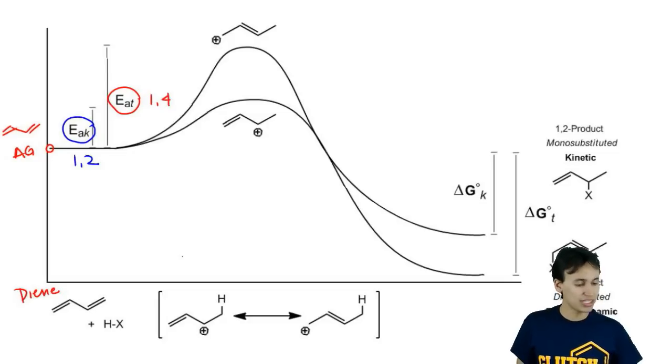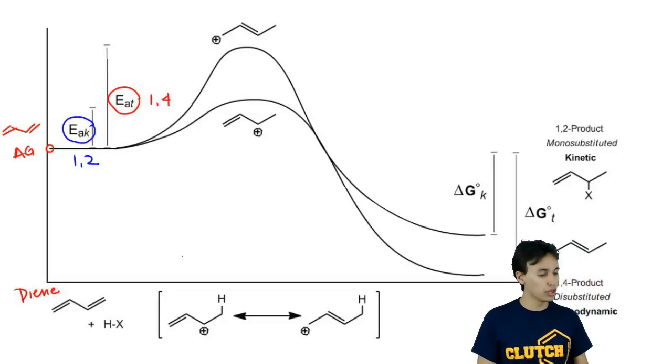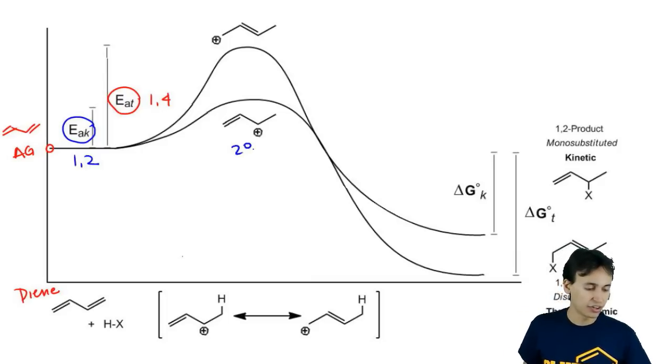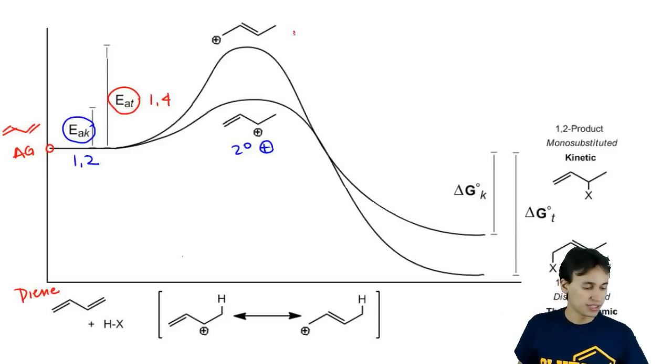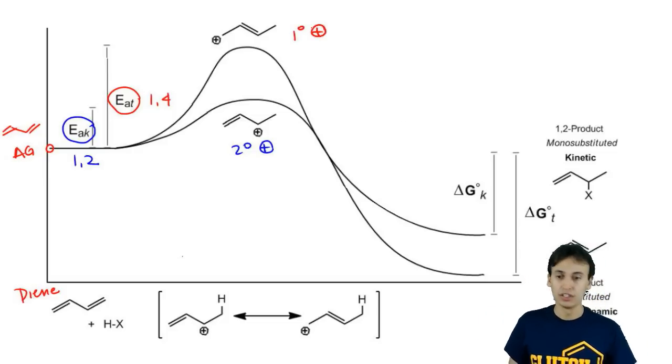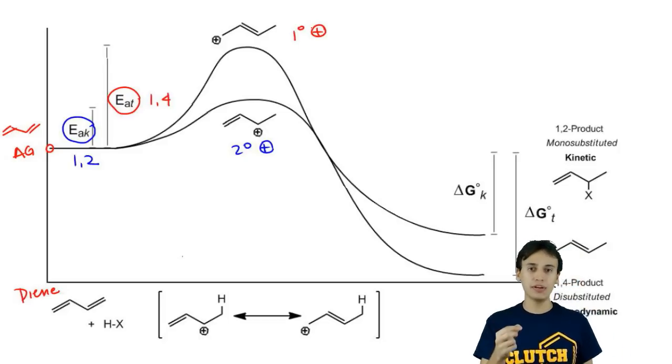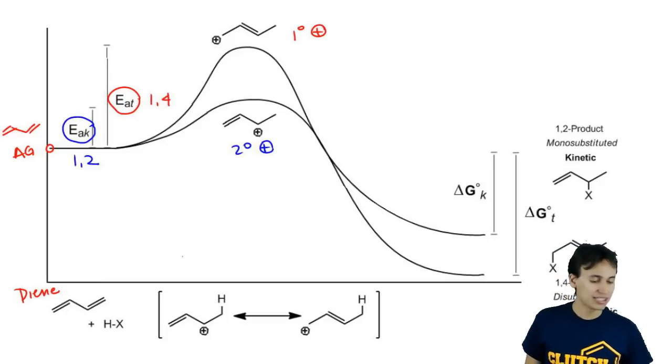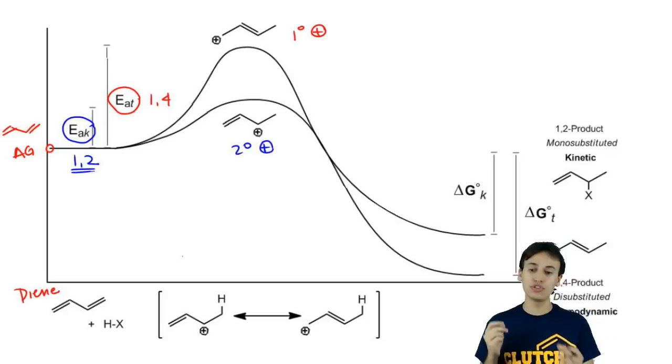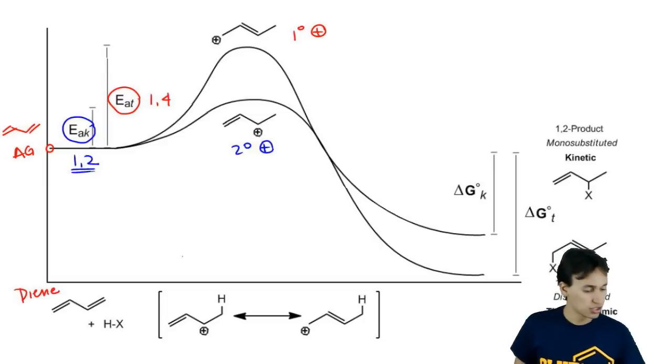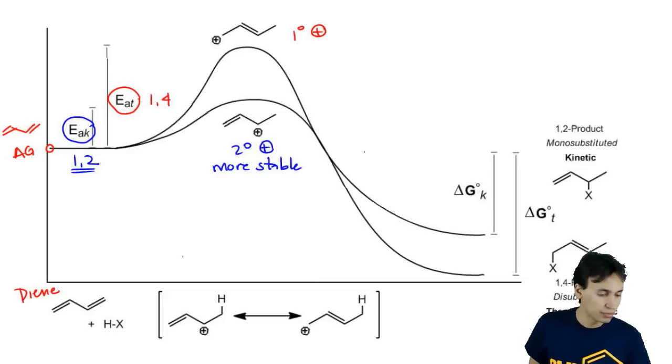What we see when we're looking at the different types of intermediates is that the 1,2 intermediate is a secondary carbocation whereas the 1,4 intermediate is a primary carbocation. Do you guys remember which one is more stable? Would a primary or a secondary carbocation be more stable? Secondary. What that means is that the preferred intermediate is actually going to be the secondary or the 1,2 product. The 1,2 product is going to flow through an intermediate that is more stable. This intermediate is more stable and this intermediate is less stable.